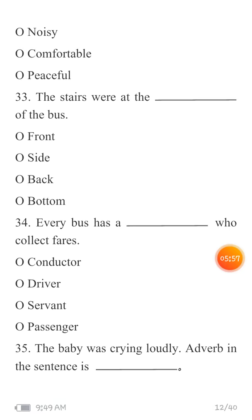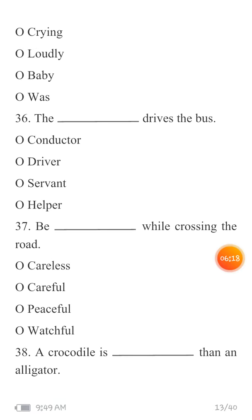MCQ 35: 'The baby was crying loudly.' Adverb in the sentence is — baccha bohat tez awaz se ro raha tha. You have to identify the adverb — the word giving information about the verb 'crying.' Your options are: crying, loudly, baby, and was.